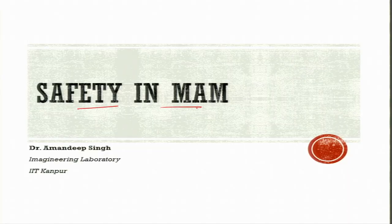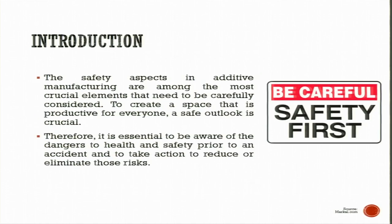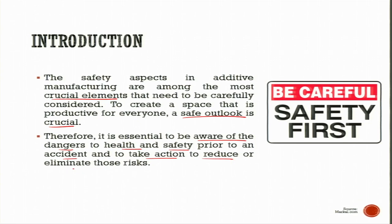Safety in metal additive manufacturing covers potential hazards including high energy density sources, high voltage sources, chemical hazards, and powder hazards. Safety aspects in additive manufacturing are among the most crucial elements that need careful consideration. Due to high energy sources, chemicals, and metal powders used in additive manufacturing systems, sufficient safety precautions must be taken in both research labs and industry. It is essential to be aware of dangers to health and safety prior to an accident and to take action to reduce or eliminate those risks.